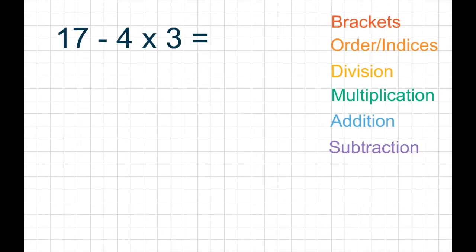This next example says 17 take away 4 times 3. So once again, we're going to go through our order of operations and start with brackets. We don't have any of them, so we miss out that step. We don't have any orders or indices, so we miss that one out. And we don't have any division symbols. The first one we come up against is multiplication. So we need to do that first. So 4 times 3 is 12.